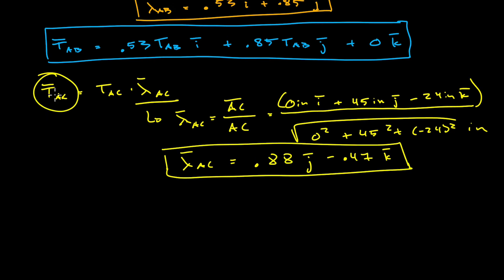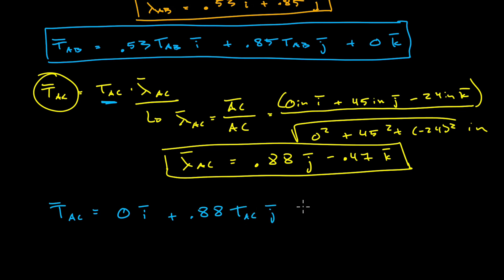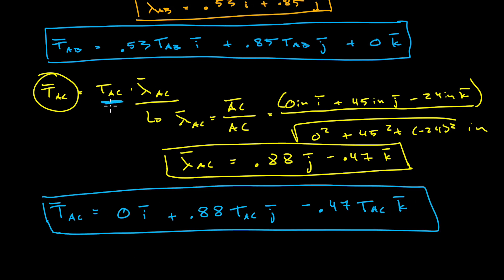So our numerator is finished — this is the vector from point A to point C. Again that does not have unit length, so we normalize, which gives us the unit vector lambda AC: 0.88J minus 0.47K. What we're trying to do is describe the vector TAC, so in order to do that we multiply by the magnitude. The equation for tension in cable AC is going to be 0I plus 0.88 TAC in the J direction minus 0.47 TAC in the K direction. When we multiply by this scalar magnitude, it gets distributed into each one of the terms in the unit vector.